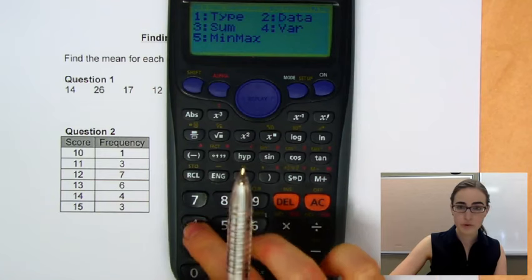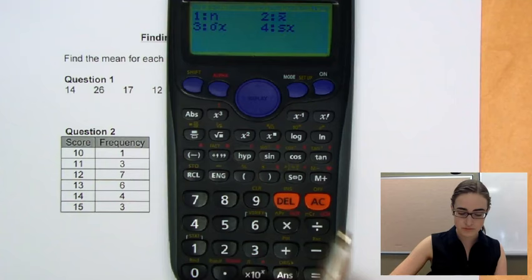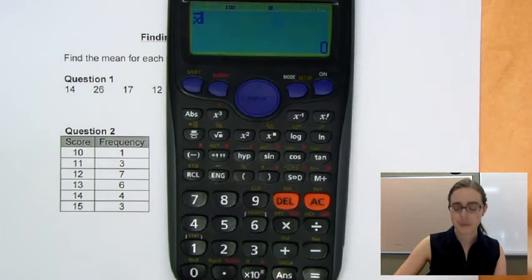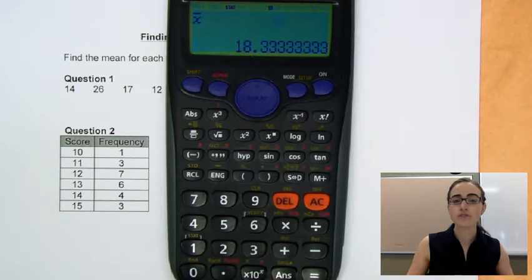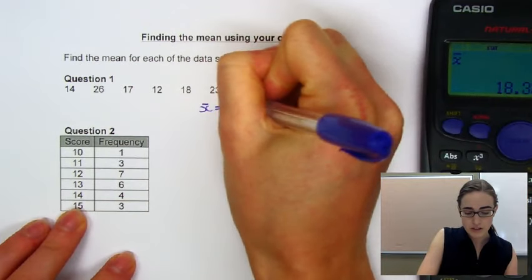Then we're going to press 4. And then that 2 there has an X bar written on it. So we'll press 2. So this is going to find us our mean. So we'll press equals. And it gives us our mean as 18.3 recurring. We'll just round it off to one decimal place as 18.3.